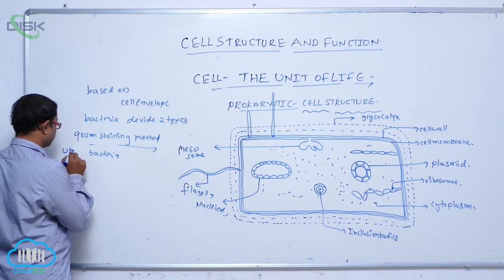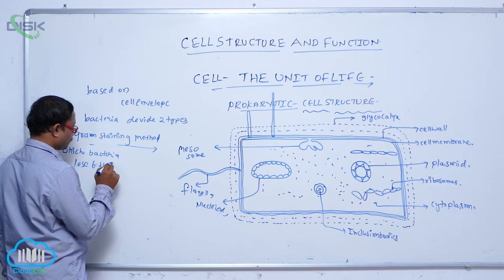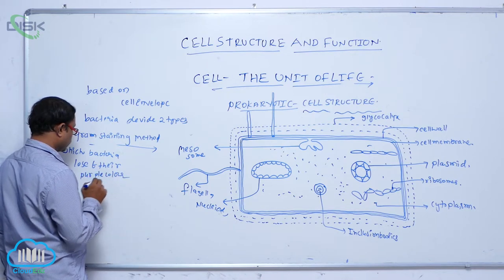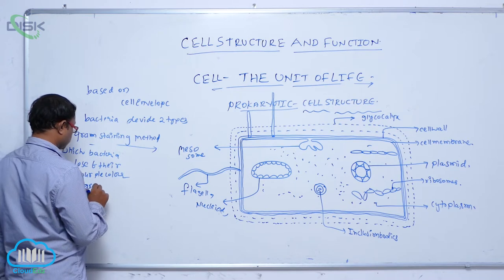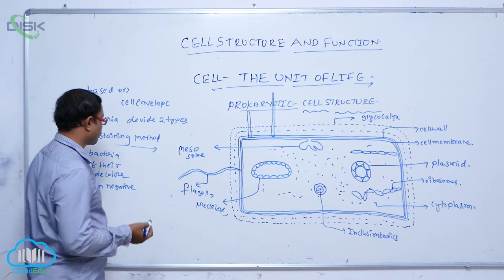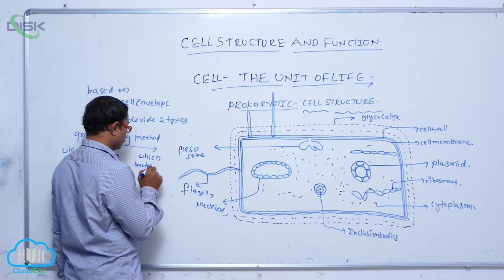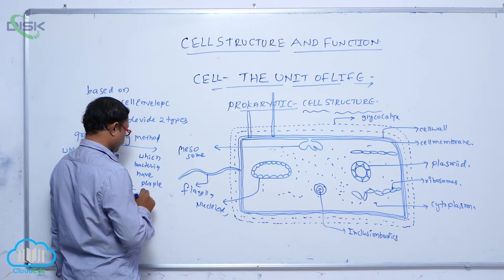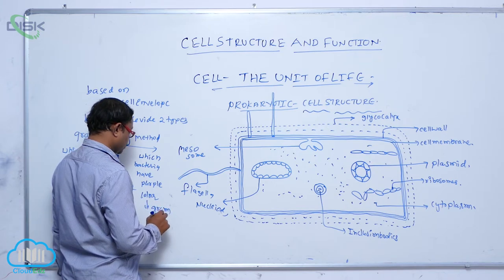After washing with the alcohol solution, whichever bacteria lose their purple color are known as gram negative. Whichever bacteria retain their purple color are known as gram positive.